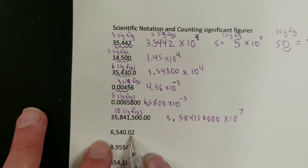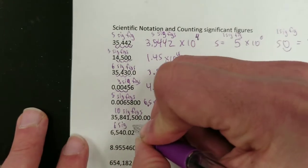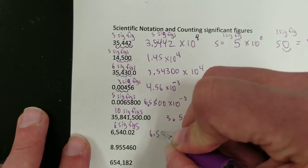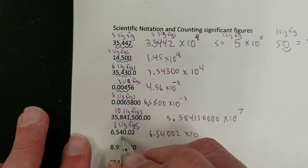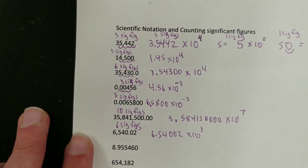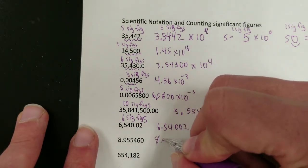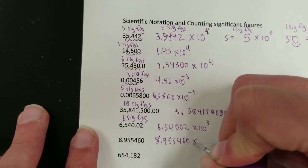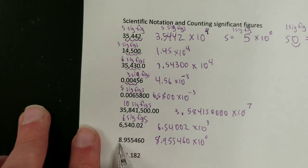And even for numbers with captive zeros, it's the same thing: 1, 2, 3, 4, 5, 6 sig figs. That gives 6.54002 times 10 to the — let's see — 1, 2, 3 — so times 10 to the 3rd. Or even just with a number like this: I don't have to move the decimal at all, so 8.955460 times 10 to the 0 power. And how many sig figs is this? Trailing zeros count when there's a decimal — so 1, 2, 3, 4, 5, 6, 7 sig figs.